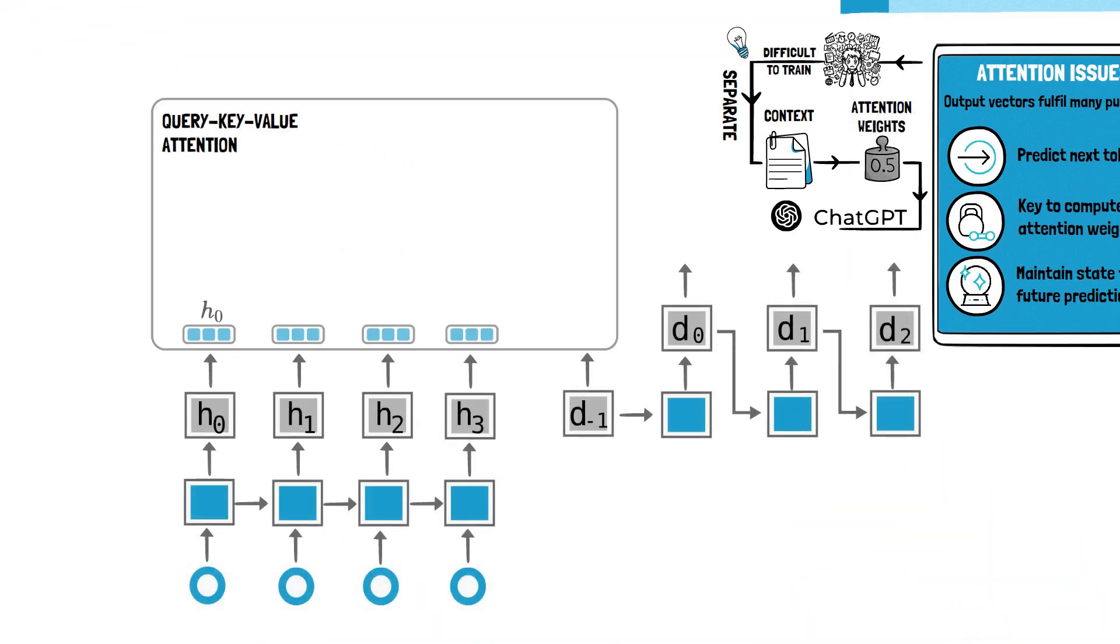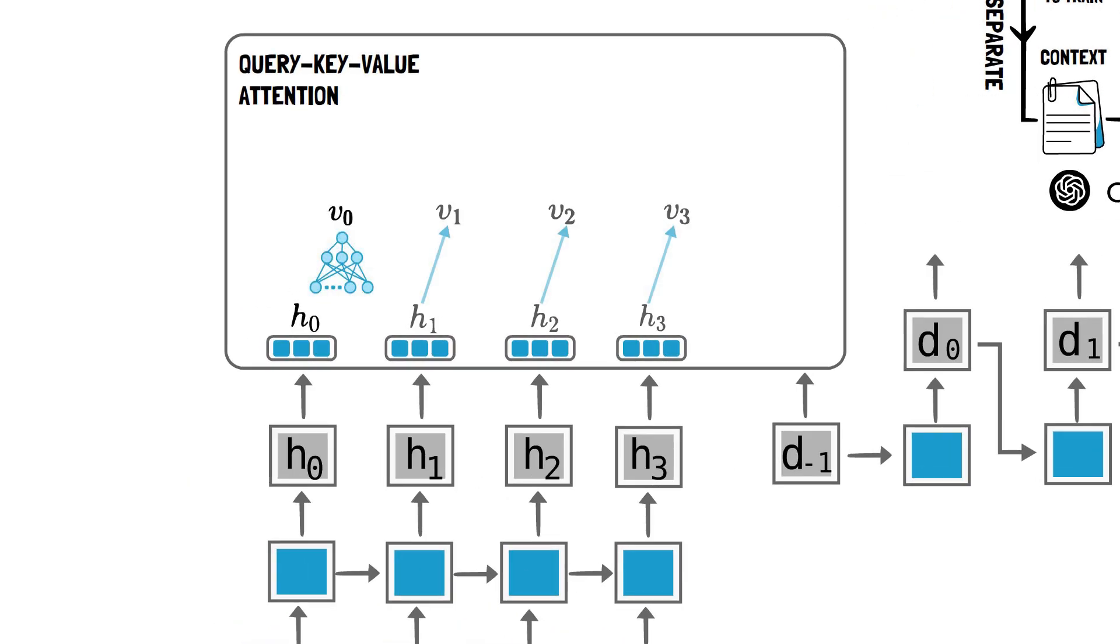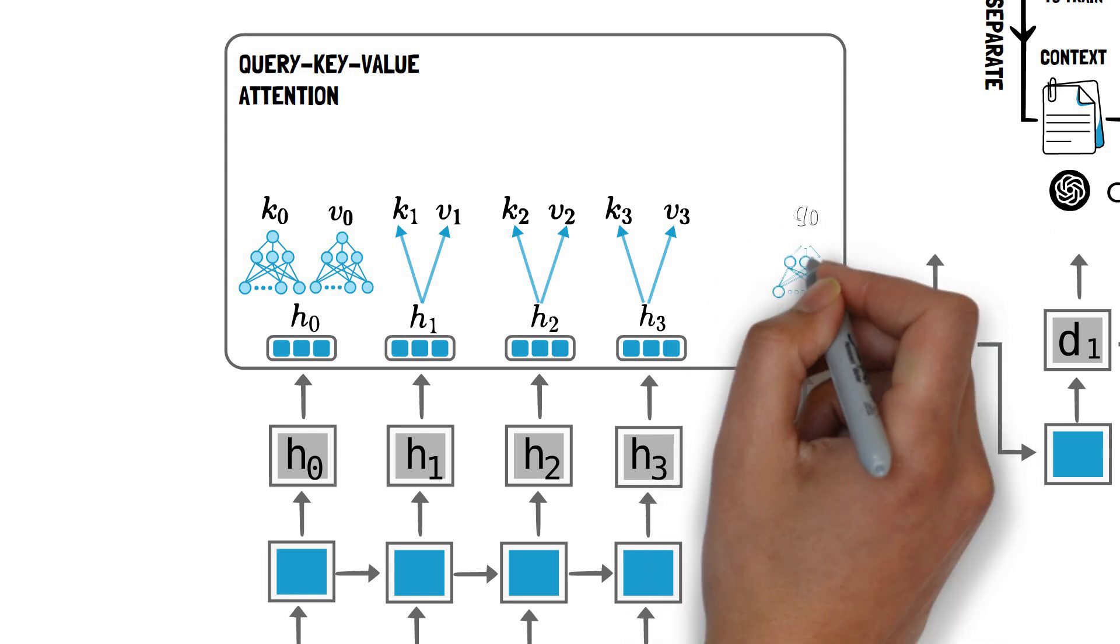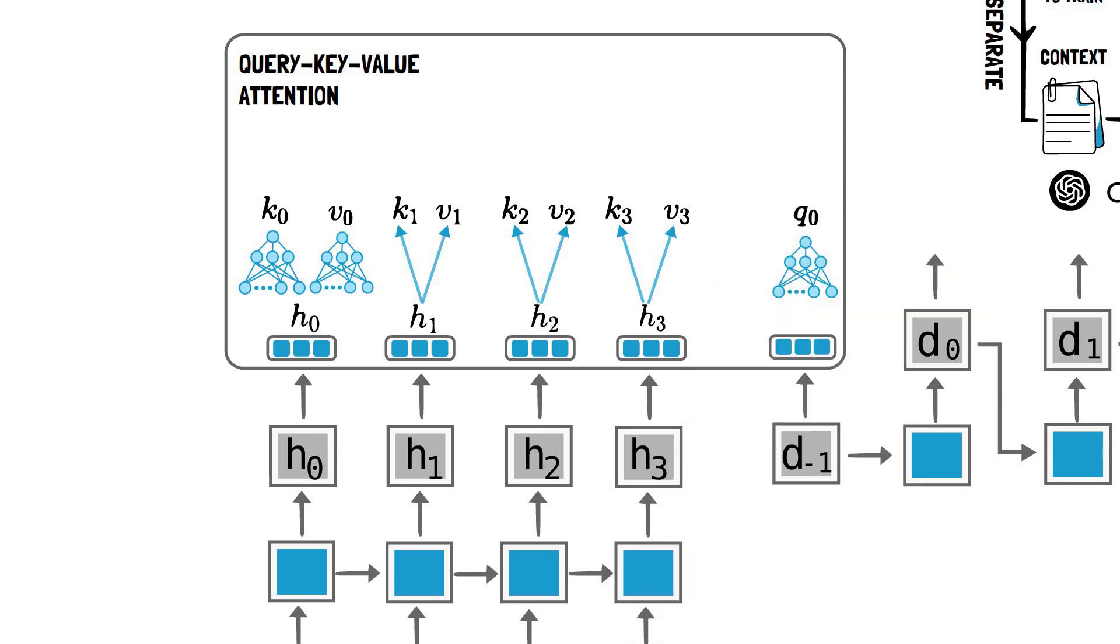In this more general attention mechanism, the encoder generates two distinct vectors at each step. A value vector used to calculate the context and a key vector for determining attention weights. Similarly, the decoder produces a specific query vector at each step.